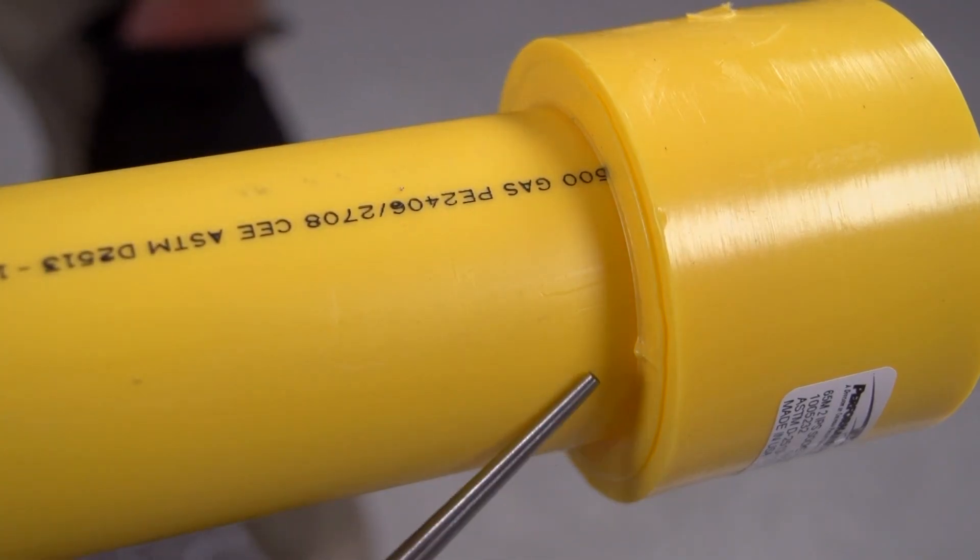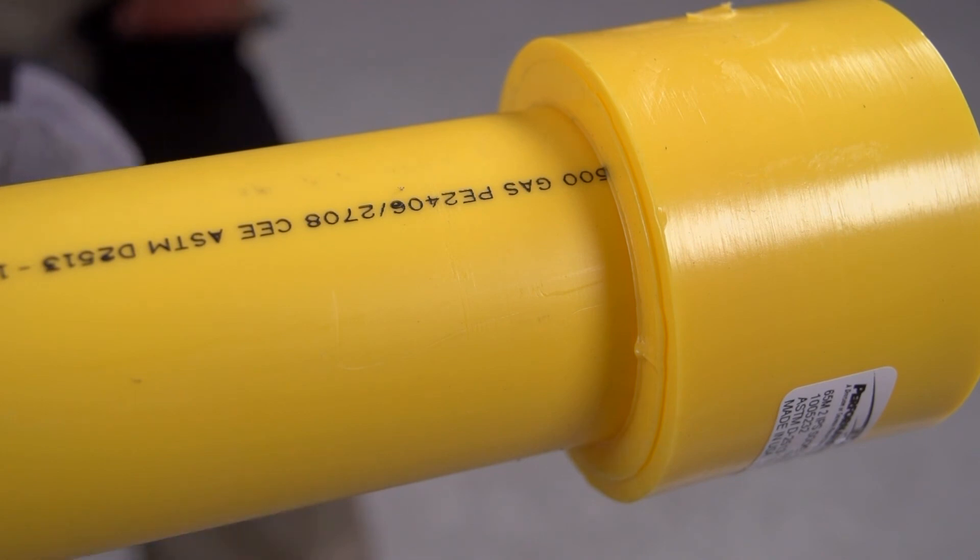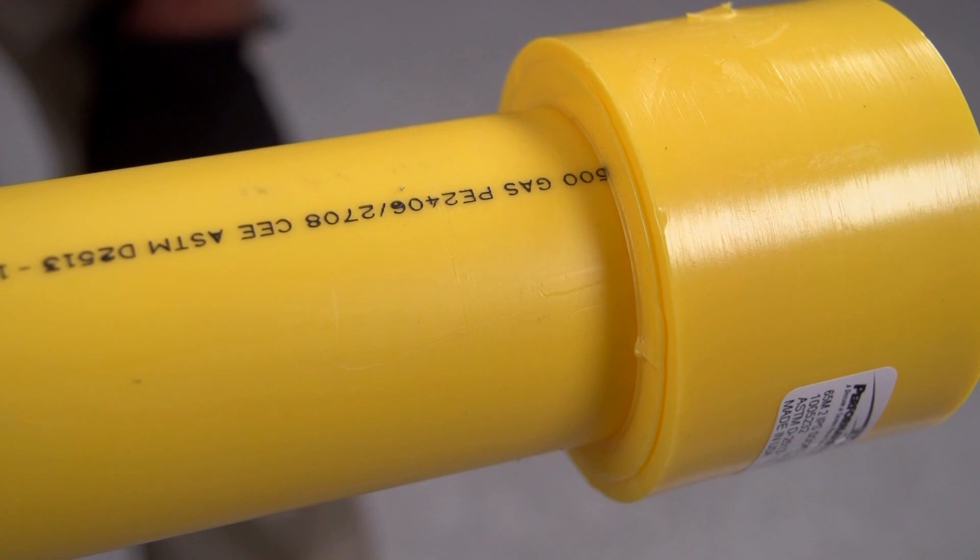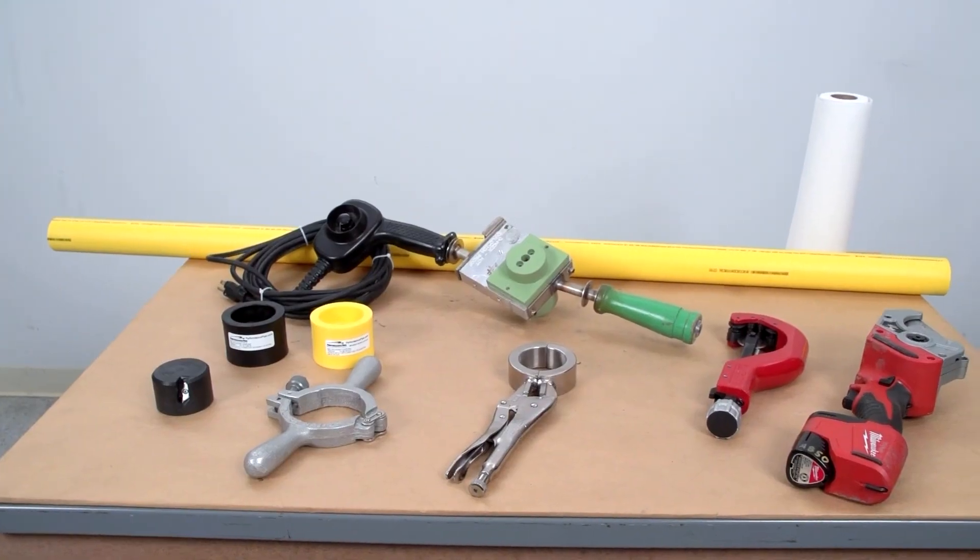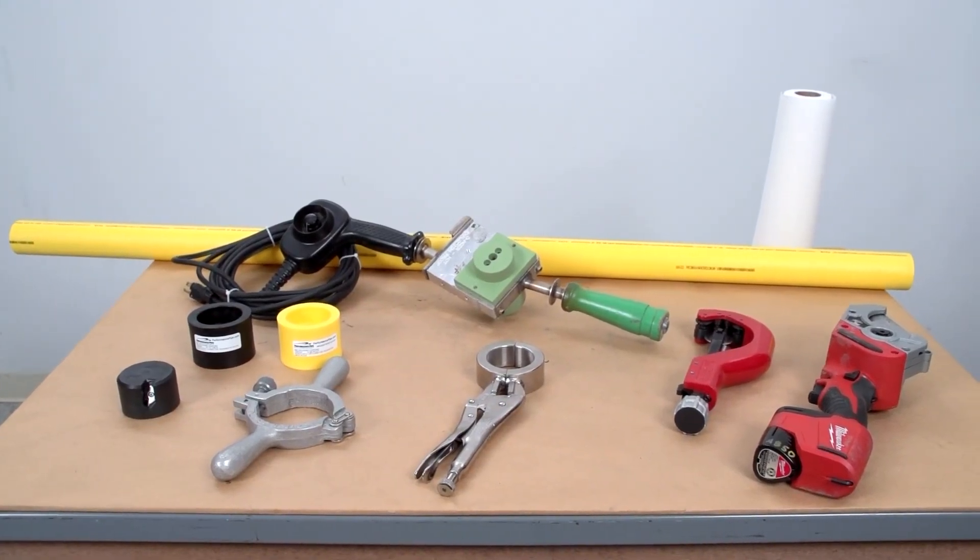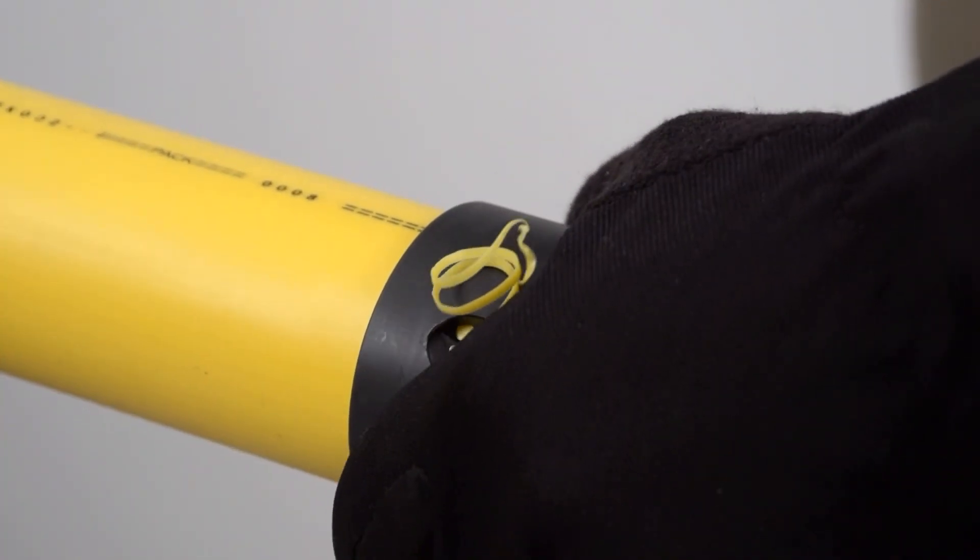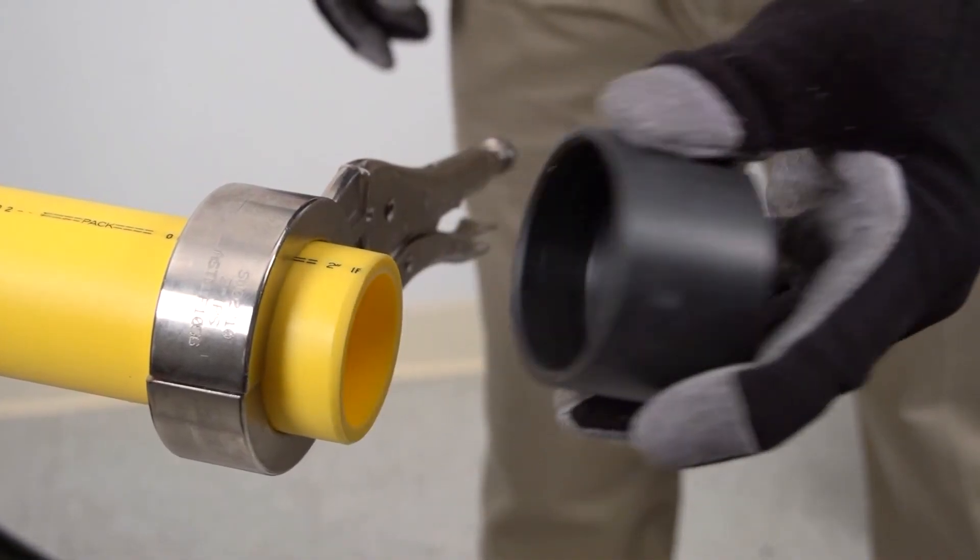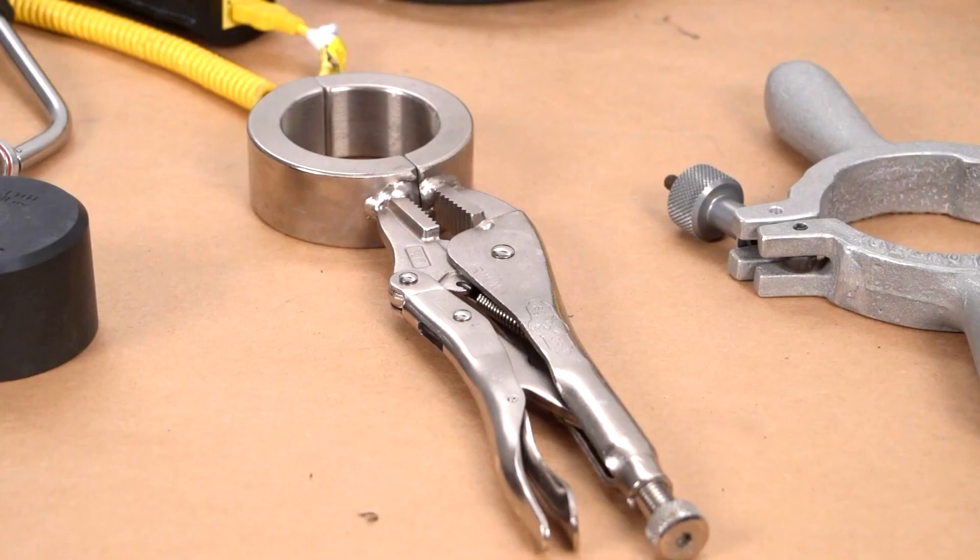Socket fusion involves the heat fusion of a pipe onto one side of a socket fitting to serve as a connection that can be fused to another pipe or fitting. In socket fusion, the following equipment is required: a chamfering tool, a depth gauge, and some manufacturers combine the chamfering tool and depth gauge.